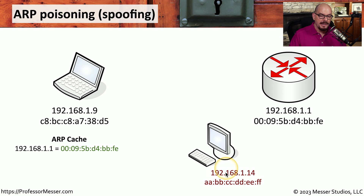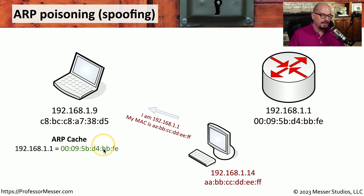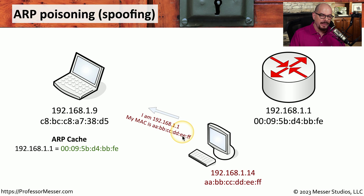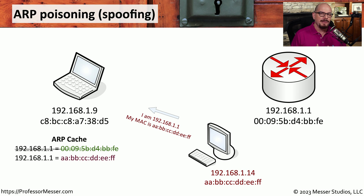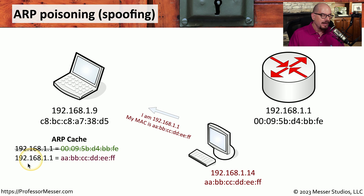Now we have our attacker, with an IP address of 192.168.1.14 and a MAC address ending in Echo-Echo-Fox-Fox. The laptop already has the router's MAC address saved in cache, and there has not been a subsequent request to update that ARP information. But the attacker sends an ARP response anyway claiming to be 192.168.1.1 with a MAC address of Echo-Echo-Fox-Fox — identical to the attacker's MAC address. Since ARP has no authentication function, the laptop accepts this message and overwrites its cache with 192.168.1.1 mapped to Echo-Echo-Fox-Fox.